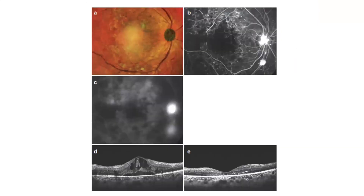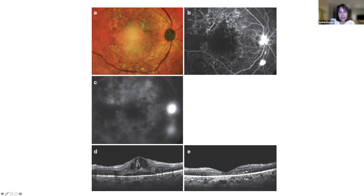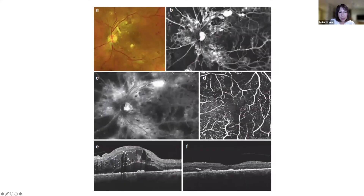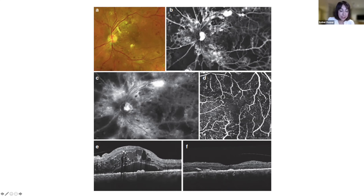This shows combination proliferative retinopathy and DMO — subretinal fluid and intraretinal fluid at the macula, with NVD and NVE on fluorescein. Marked ischemia is visible with capillary dropout, a hot disc with neovascularization, and macular edema. This combination responds well to anti-VEGF. The final visual result is a different question — the outer retina is not normal, so this would carry a guarded prognosis for visual recovery, but at least progression is halted and neovascular glaucoma prevented.